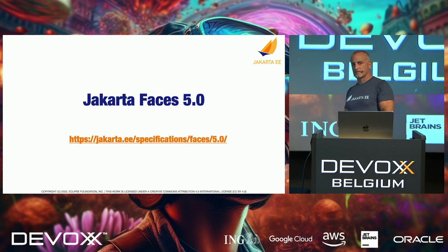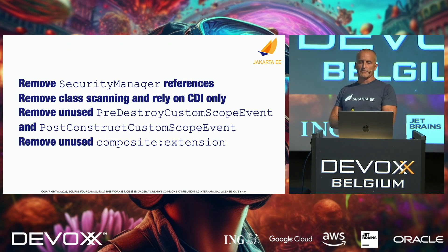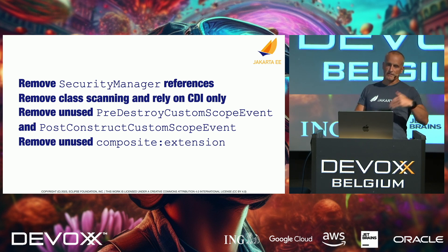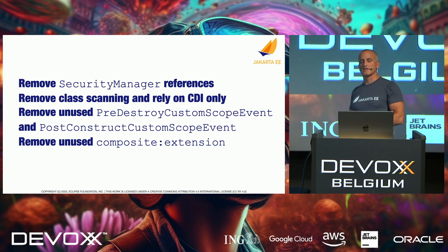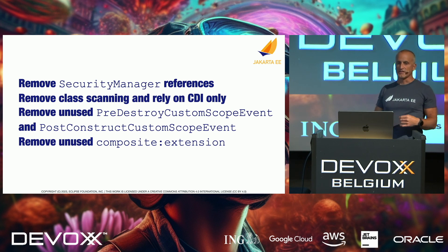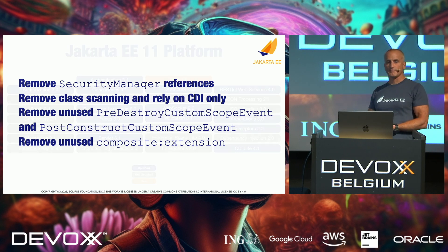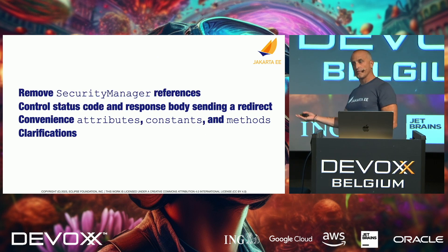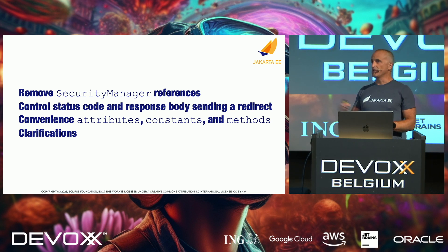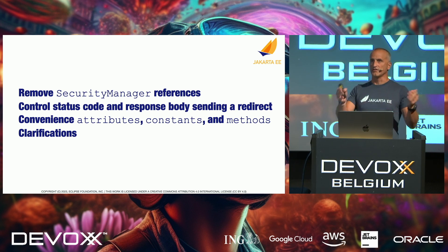Jakarta Faces is removing everything related to Security Manager and relying more on CDI, continuing the work from CDI phases — going full CDI. Now that managed beans are gone, they continue the road toward being fully CDI-based and removing some unused events and other things no longer used. Jakarta Servlet 6.1 is also a minor release: Security Manager is removed, you get more control of redirect status codes, some convenience methods for attributes and constants, and clarifications of how to use the APIs.